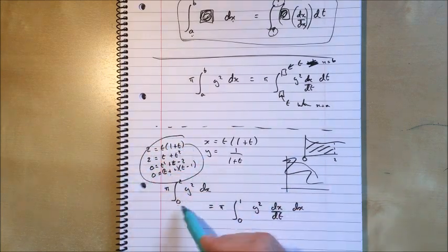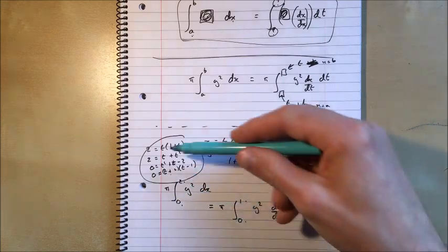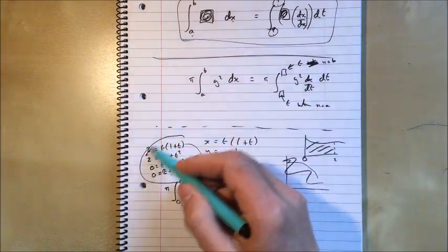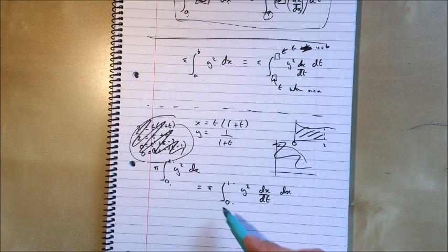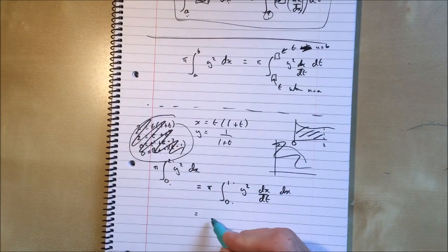Now that whole bit there, going from these limits to these limits, of course, if you're on an exam, you would write that out much more carefully. You wouldn't just sort of scribble it in a corner like that. But there we go. Now this is what we're trying to find.